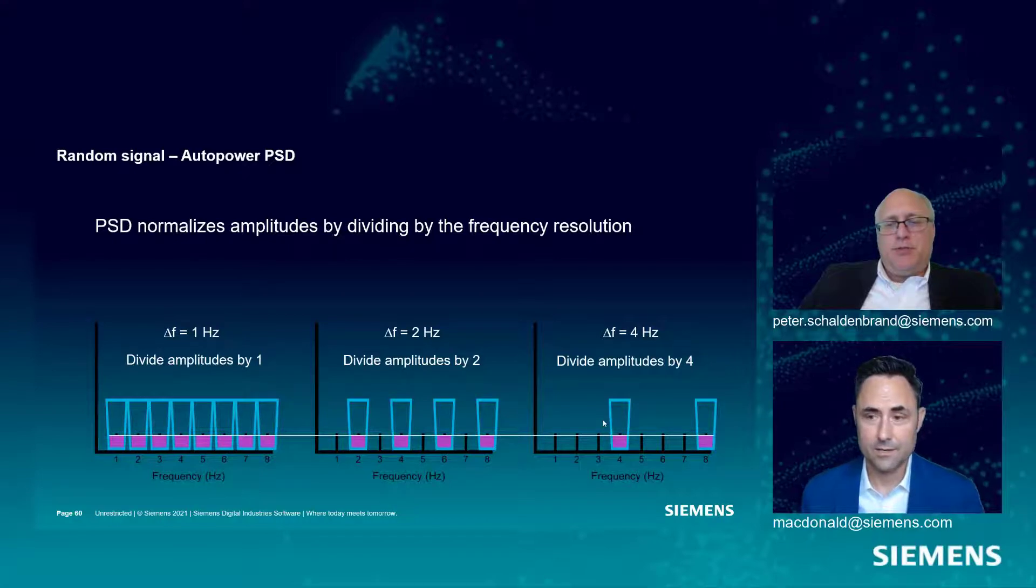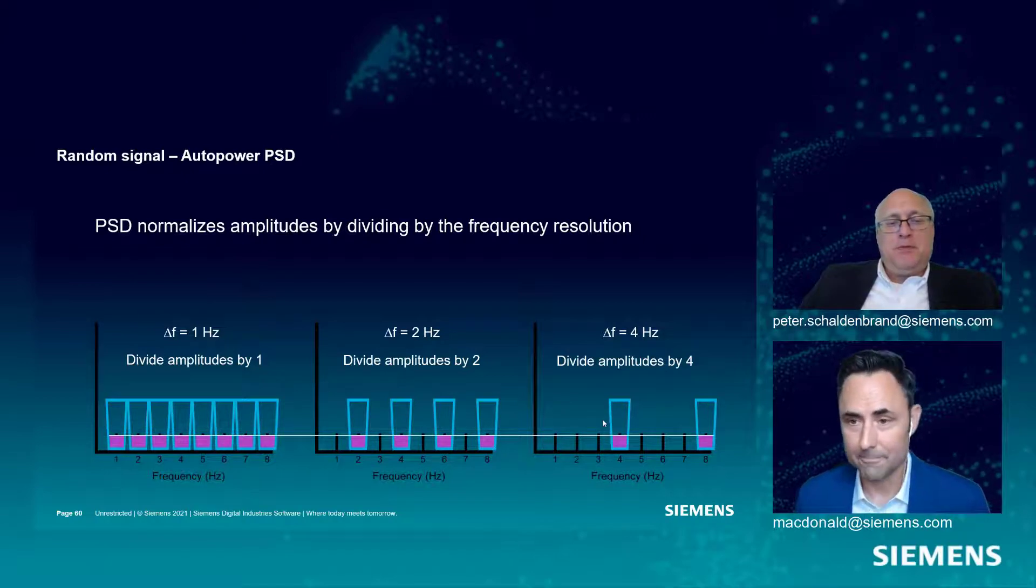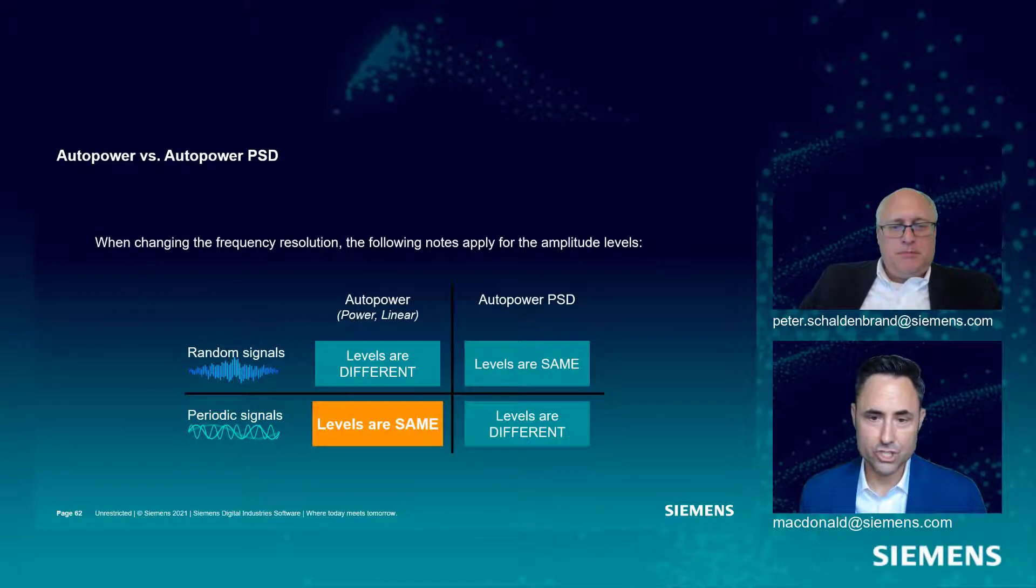Maybe I don't have to measure only with the one hertz delta F if I use PSD. That's right. With a random signal, that is 100% right. Let's see how things change, though, if we move to a periodic signal.